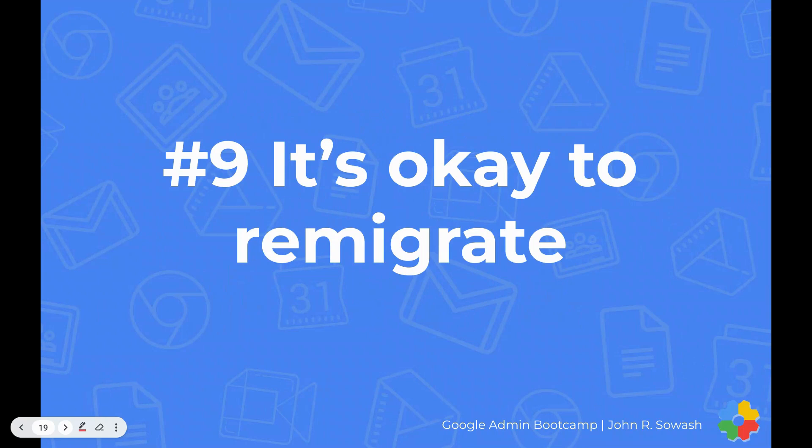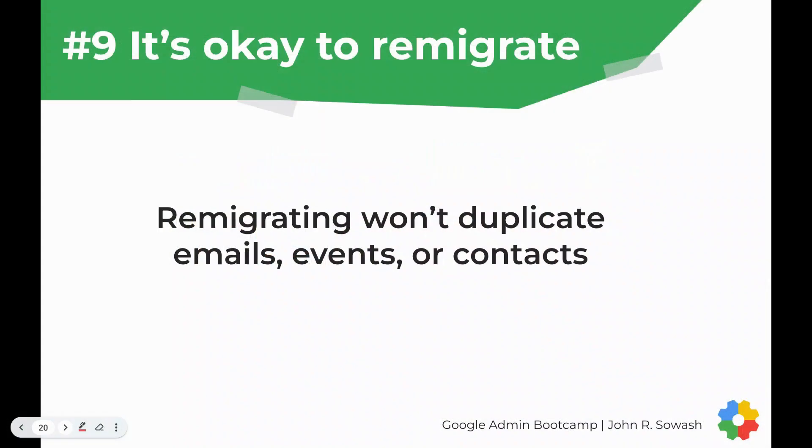Tip number nine is something that will hopefully be very relieving. If something happens — data doesn't migrate, you don't wait to 100%, you cancel early, or you mess something up — it's okay to re-migrate. The migration tool is very forgiving. Re-migrating will not duplicate emails, events, or contacts. If you re-migrate an account, it will check the source and destination and skip anything already there. We had several accounts where emails migrated but weren't labeled correctly — the superintendent's account had this issue. We just re-migrated it, let it reach 100%, and she could continue working in her account. When the re-migration finished, it put all the emails into the correct labels. So it's okay to re-migrate if something happens.